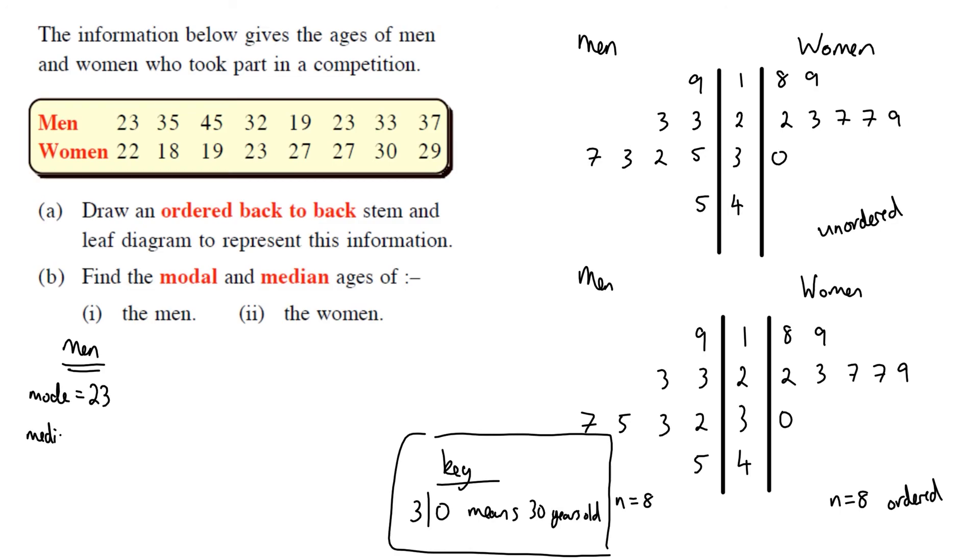And the median. Let's do the mode for the women as well just now. So the mode for the women and the median. So the mode for the women is, so here we can see again, we've got a nine and a nine, but that's a 19, that's a 29 when they combine with the stem. So the only numbers in the same row would be a seven and a seven, which represent 27 and 27, our stem-and-leaf diagram. So the mode for the women or the modal value for the women is 27 years old.